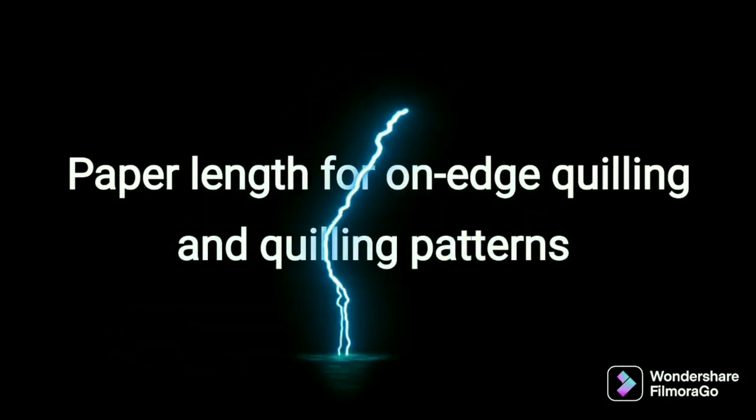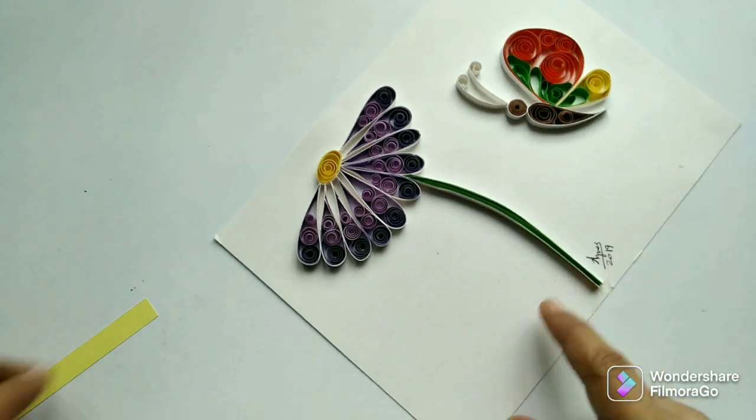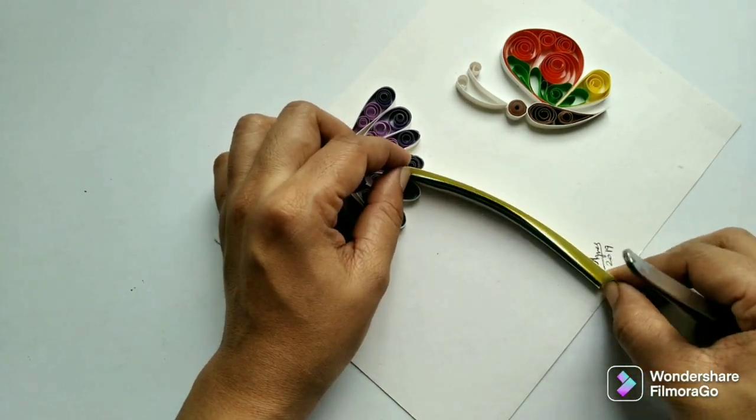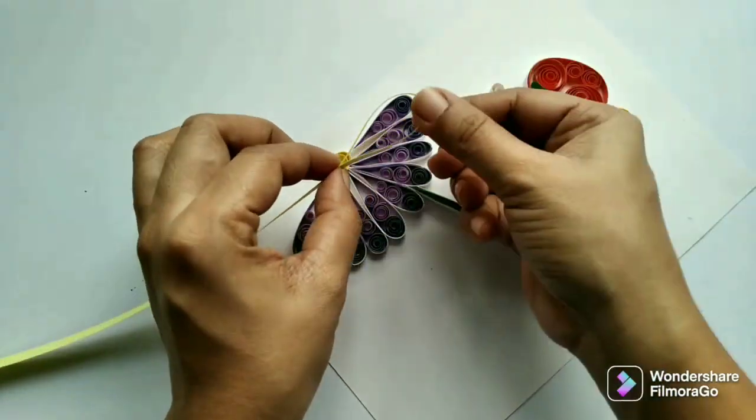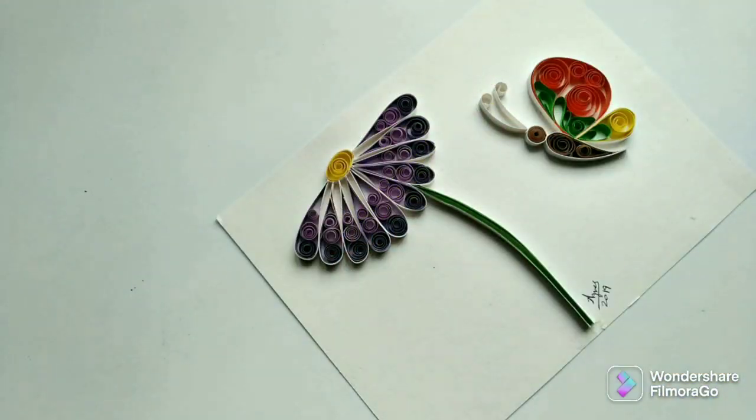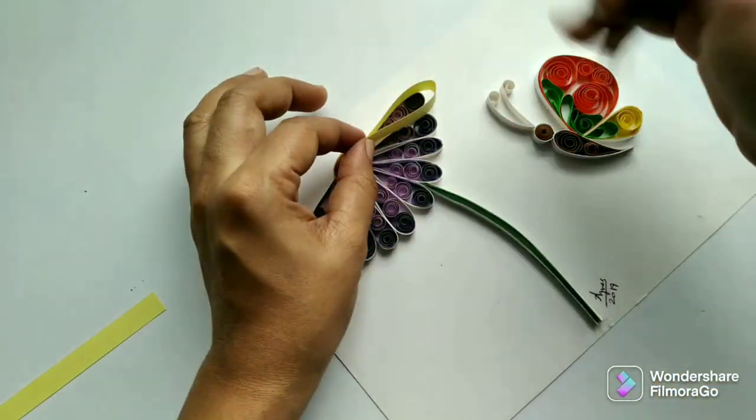Now let's see how to decide length while working on edge quilling or when using quilling patterns. For straight lines, take a long strip, keep it over the pattern or the outlines, and roughly find the length. Cut excess paper and glue them in place.